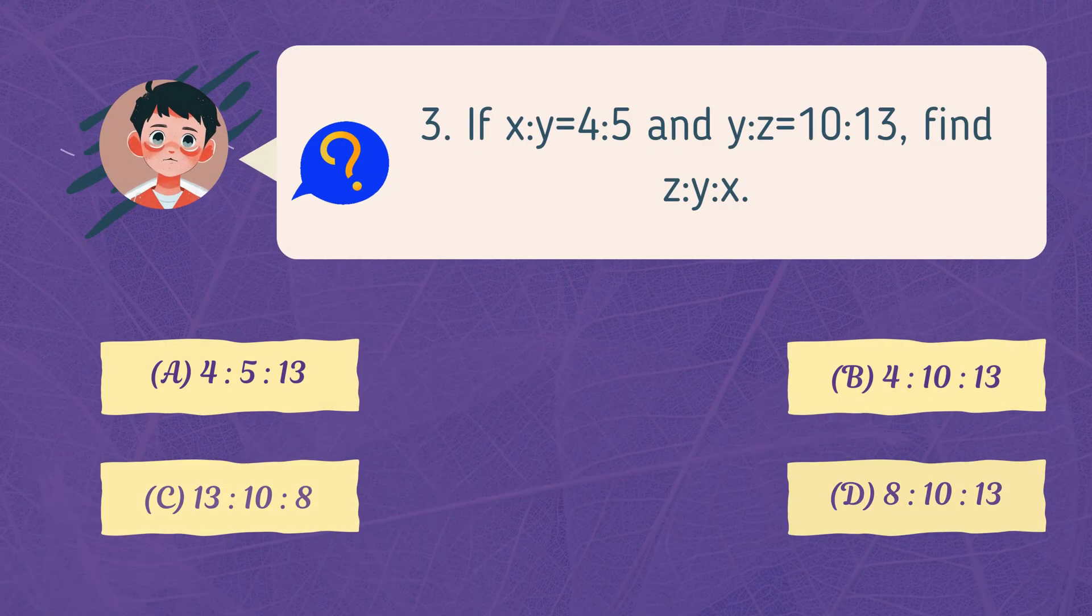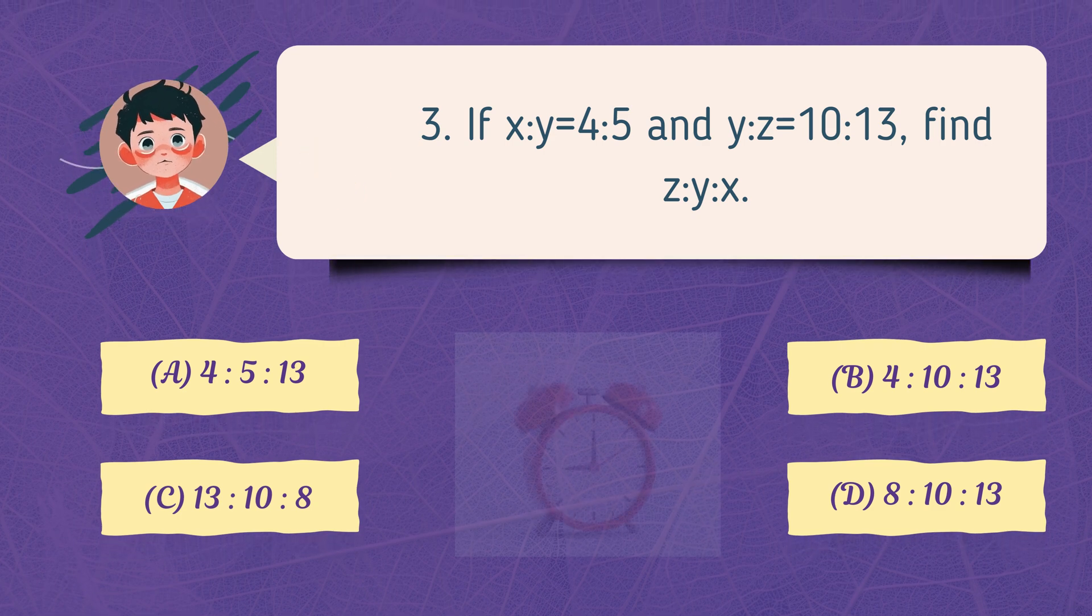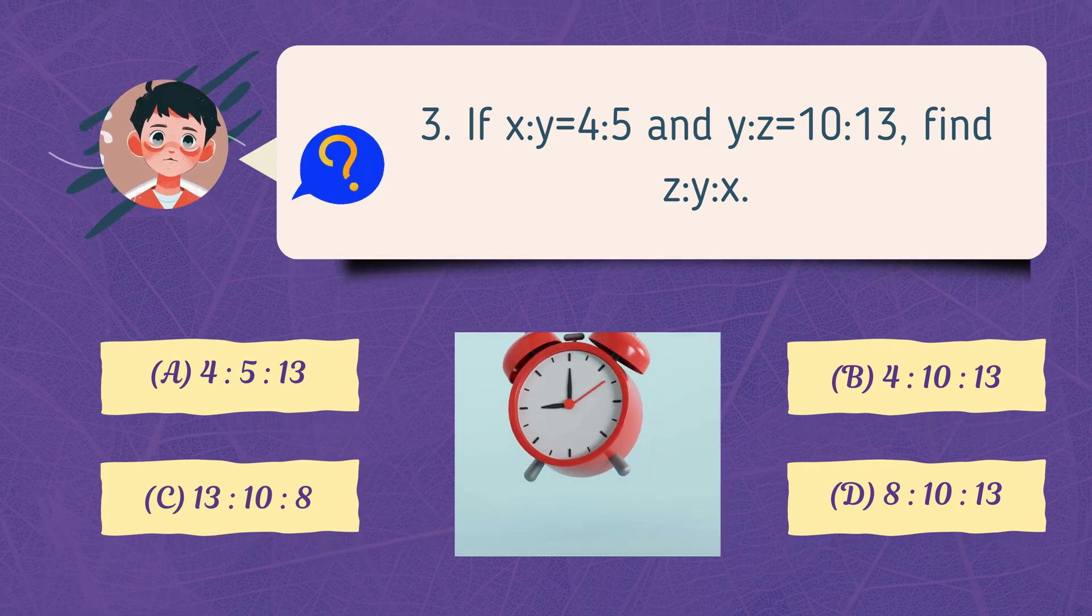If x:y equals 4:5 and y:z equals 10:13, find z:y:x.